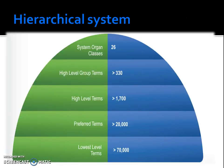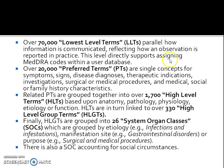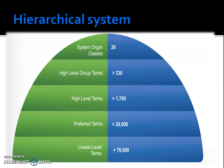The lowest level terms number more than 70,000. This tells us there are more than 70,000 terms at the lowest level, paralleling how information is communicated and reflecting how an observation is reported in practice. This level directly supports assigning MEDDRA codes within a user database. All of these are compiled into more than 20,000 preferred terms. These are single concepts which can represent symptoms, signs, disease diagnoses, therapeutic indications, investigations, surgical or medical procedures, and medical, social, or family history characteristics.